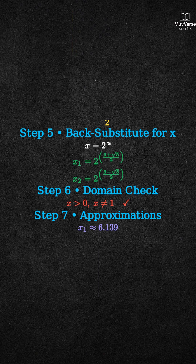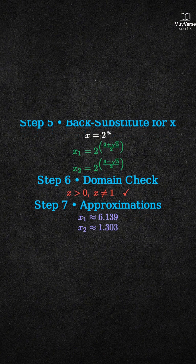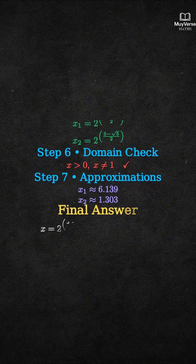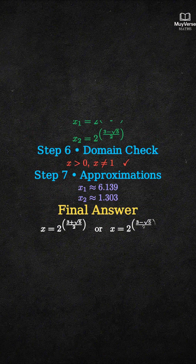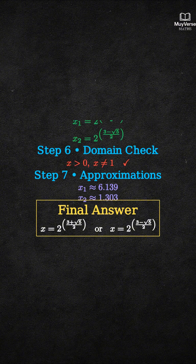Final answer: the solutions to the equation are x equals 2 to the power of (3 plus square root of 5) over 2, and x equals 2 to the power of (3 minus square root of 5) over 2.